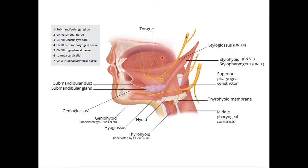Down here is the hypoglossal nerve. The name implies it goes deep to the tongue, which is true — it loops around behind the posterior digastric, then goes underneath the tongue, and innervates all the intrinsic tongue muscles. It also innervates the styloglossus. Anything with 'stylo' in its name implicates the styloid process.